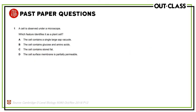The next MCQ question asks: a cell is observed under a microscope — which feature identifies it as a plant cell? Option A says the cell contains a single large sap vacuole. This is true, because a single large vacuole is found in plant cells. Option B says the cell contains glucose and amino acids — but this is not unique to a plant cell, as animal cells also have glucose and amino acids.